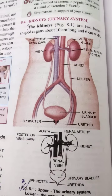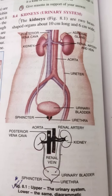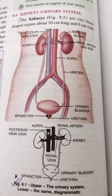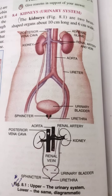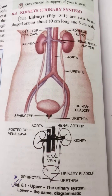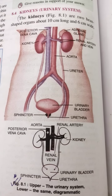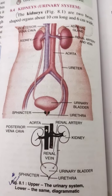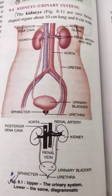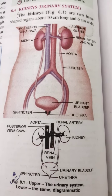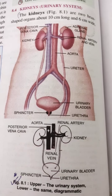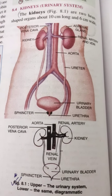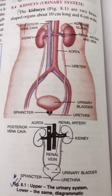Kidneys are two bean-shaped organs, about 10 cm long and 6 cm wide, located on either side of the backbone and protected by the last two ribs. This is the exact location of the kidneys — please mark it. The right kidney is at a slightly lower level than the left one.